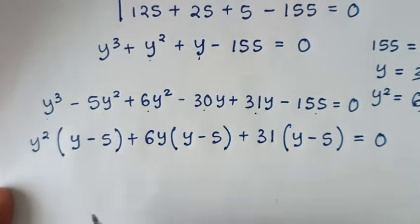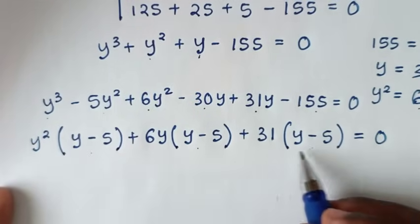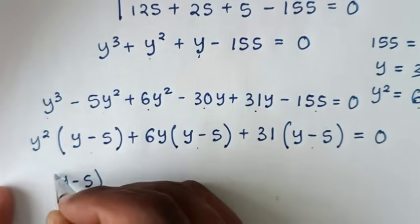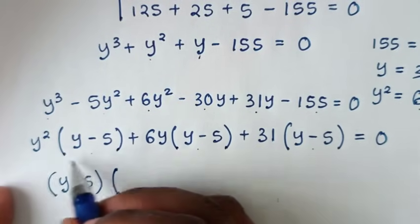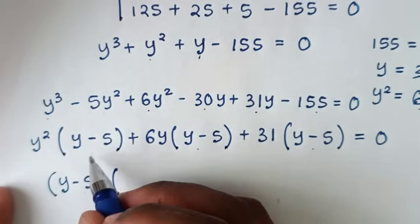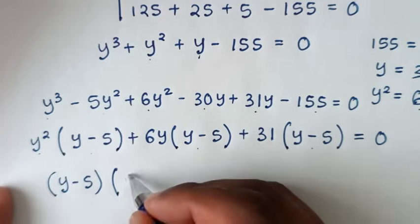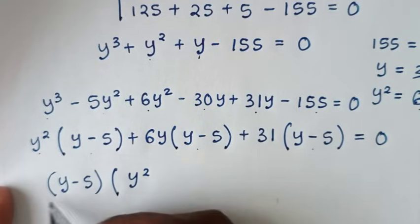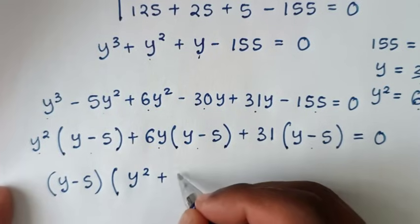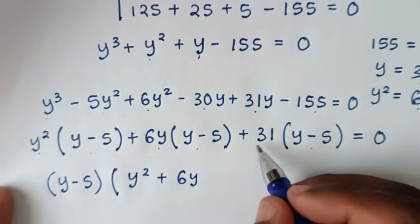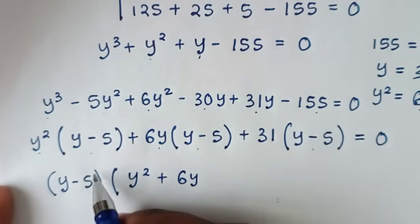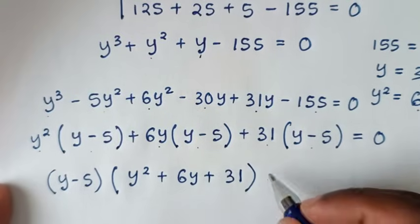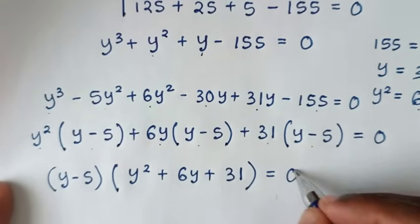In the next step, y minus 5 is now common. So we take y minus 5 out of the bracket. Dividing through, we get y squared, and dividing by y minus 5 gives plus 6y, then dividing the next group by y minus 5 gives plus 31, in bracket, is equal to 0.